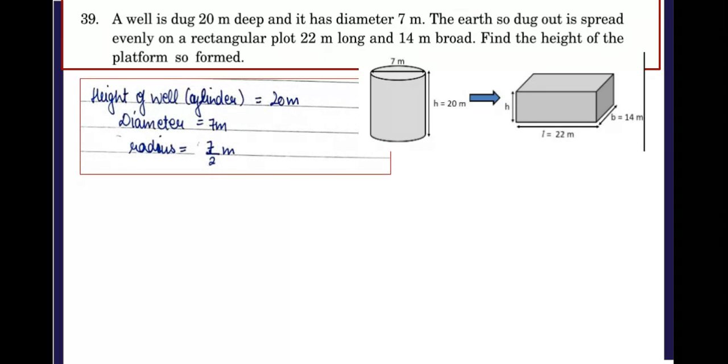So how are we going to write? First we will be writing height of the well, that is 20 meters, diameter is 7 meters. So what will be the radius? Radius will be 7 upon 2 meters.